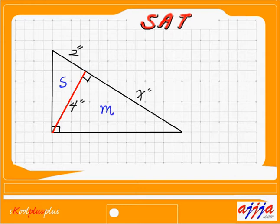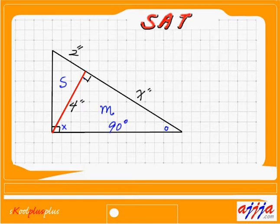Now, what about angle-wise? We check it out. The angle for this one — I'm going to call this one maybe O, right there. What about this one? I'm going to call this one X. X plus O — that's 90 degrees, right?